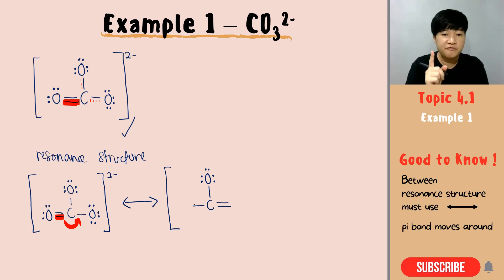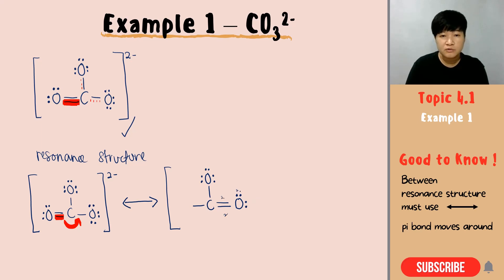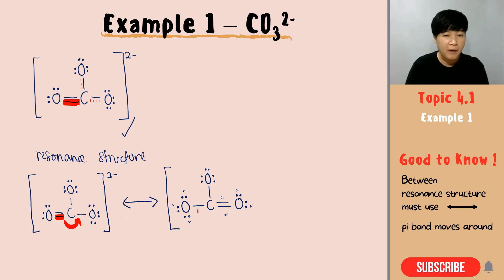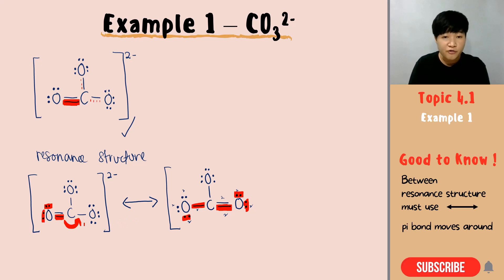Be very careful with the lone pair of the oxygen. If the oxygen is holding the double bond, it can only hold two lone pairs to achieve octet. The oxygen that loses its pi bond will then have all of its lone pairs — three lone pairs with eight electrons around it to achieve octet. The tricky part is not only moving the pi bond; when you move your pi bond, your lone pairs shall also change.